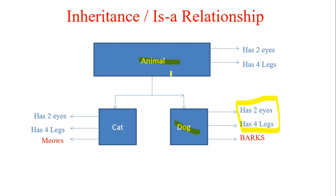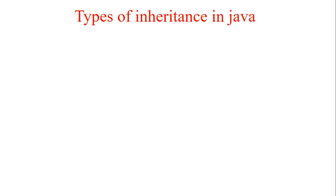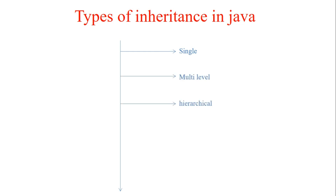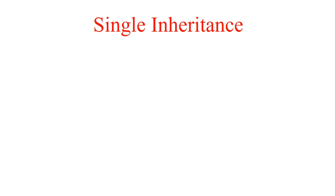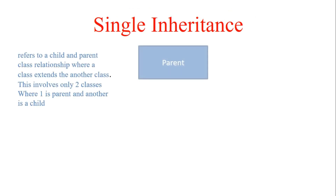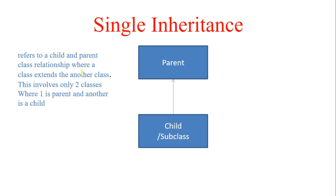Now I'll start with the types of inheritance. The types of inheritance are: single inheritance, multi-level inheritance, hierarchical inheritance, multiple inheritance, and hybrid inheritance. Let's cover each one by one.